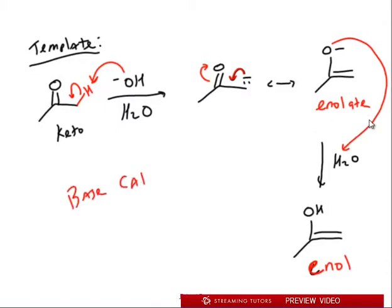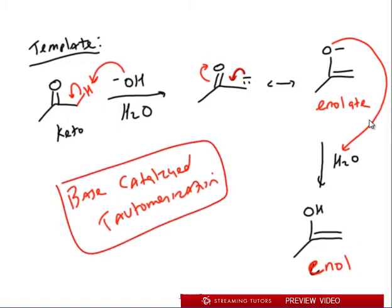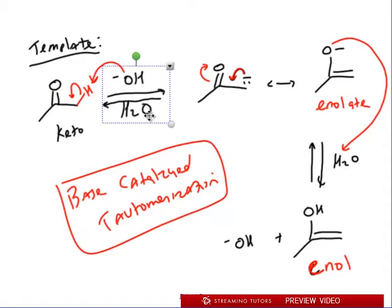This is tautomerization. This is the process. This is called base-catalyzed tautomerization. See that? Why is it base? Why is it catalyzed? Because at the end you're back to hydroxide. We start as a hydroxide, we pull off an alpha H, we go through resonance, and then we protonate. That's how we get here. But remember this is completely reversible.